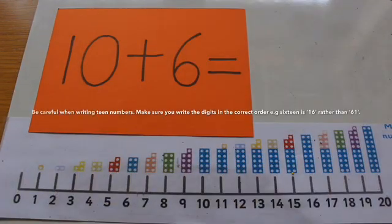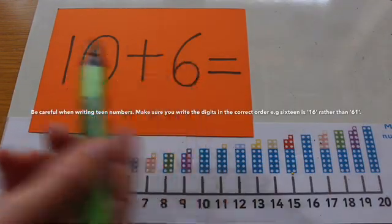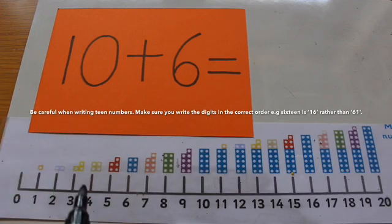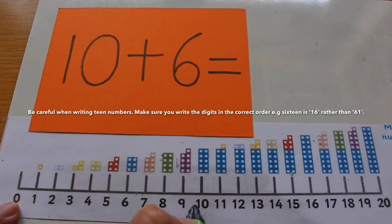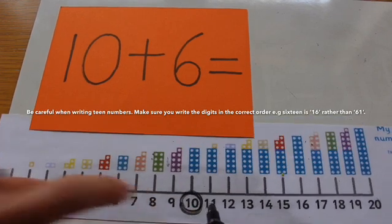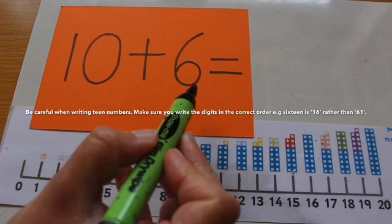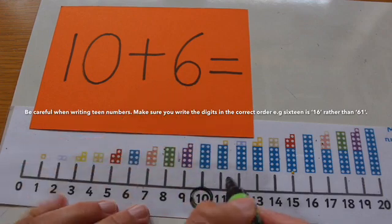We're going to do another question. We have 10 add 6, so I need to use my number line and count along to find the number 10. I'll put a circle around it, and it wants me to add 6, so I'm going to do 6 jumps forward.